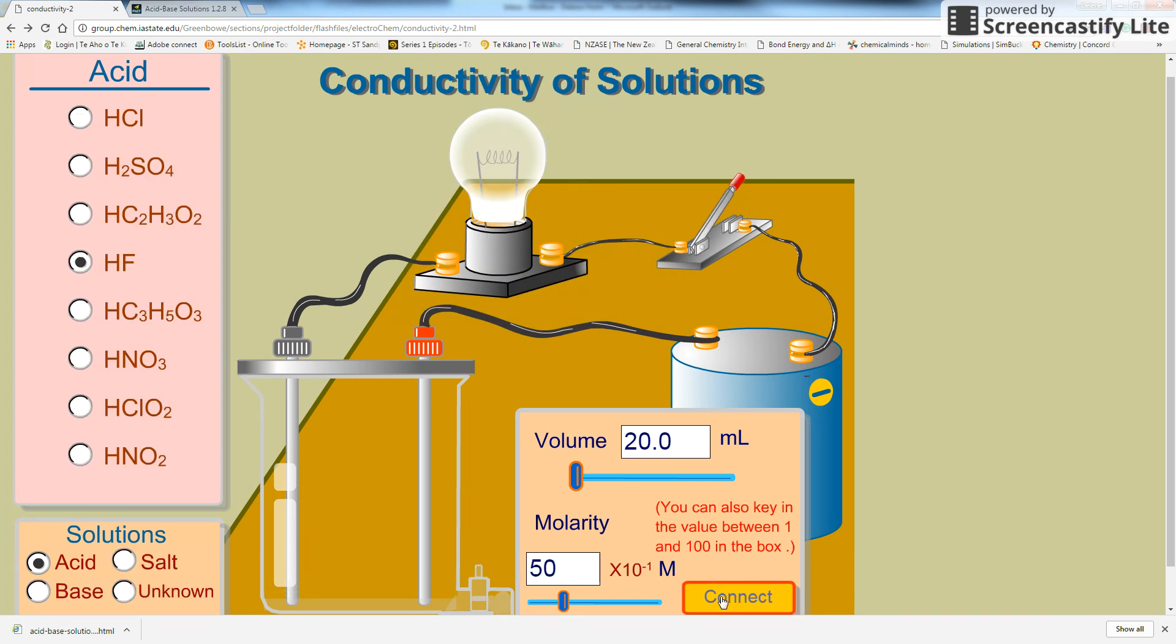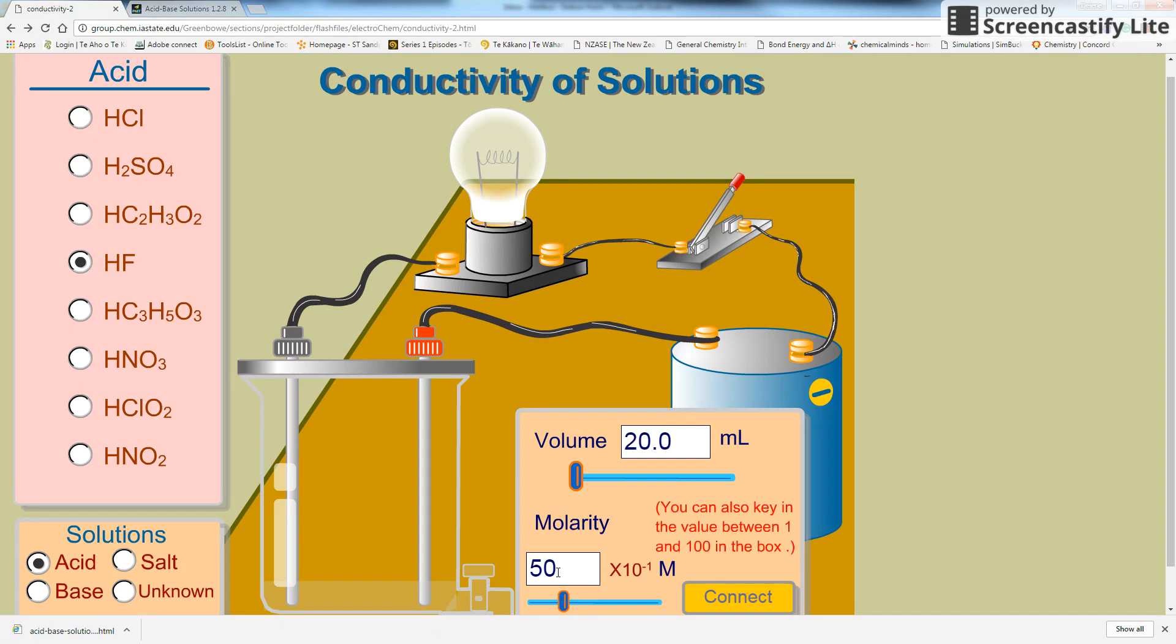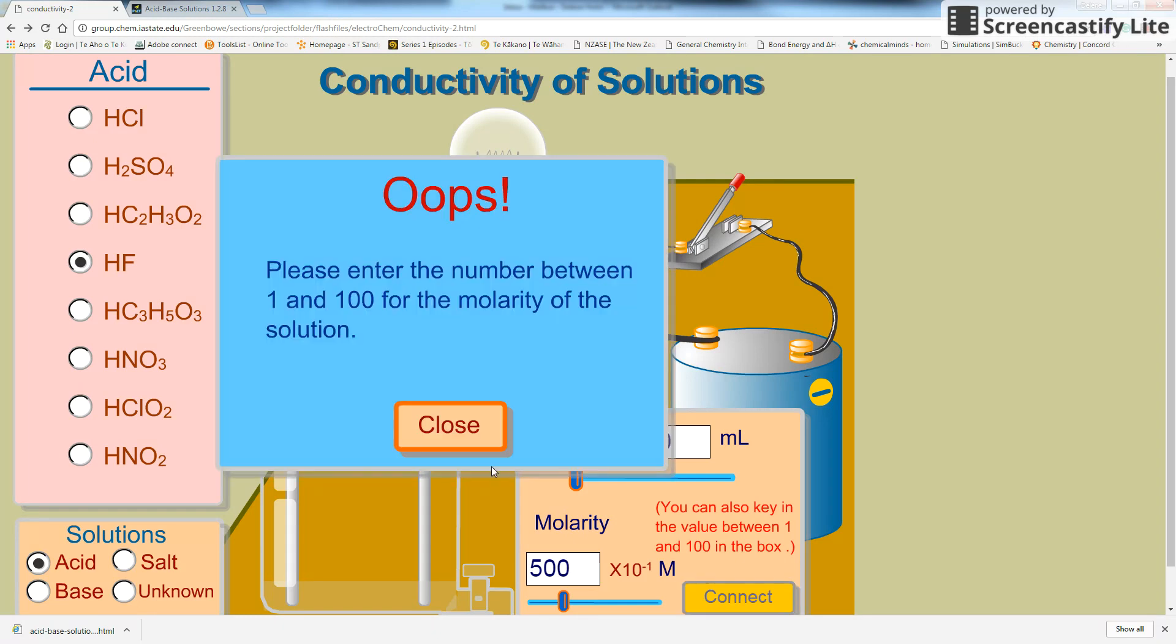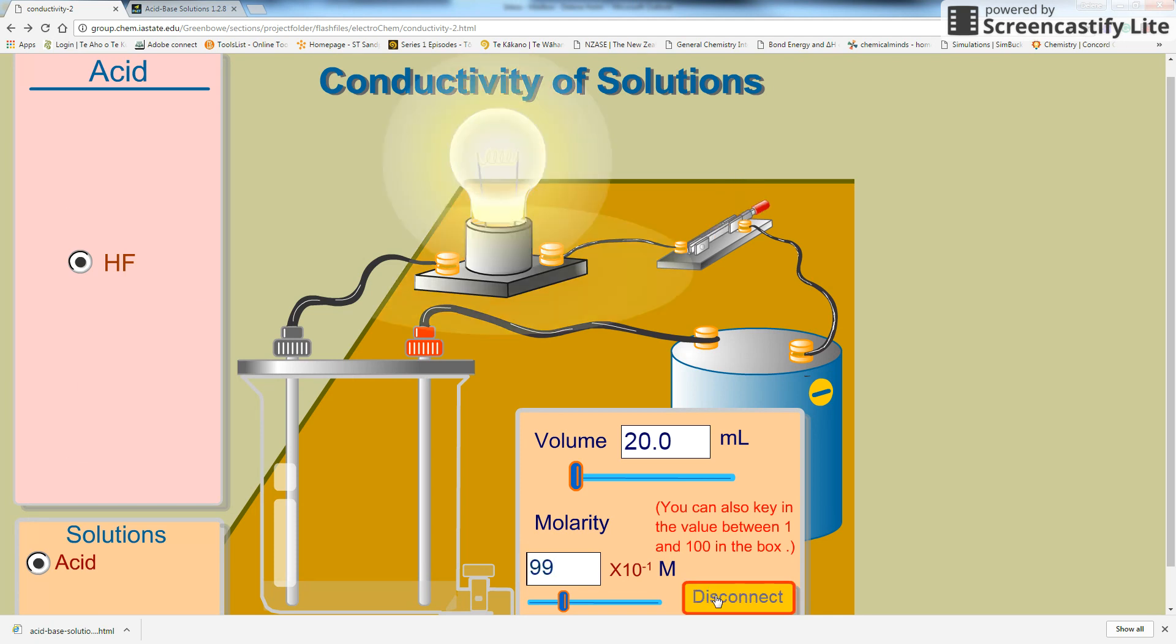So if I have it connected and I change this to 500, oops, it doesn't like that. Sorry, I forgot about that. So if I change it to 99, you can see it glows more brightly. So the more concentrated the solution for a strong acid or a weak acid, the more ions will be present for that solution, and so it'll glow more brightly.